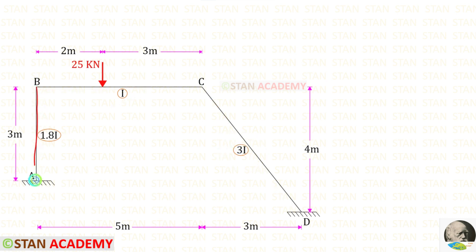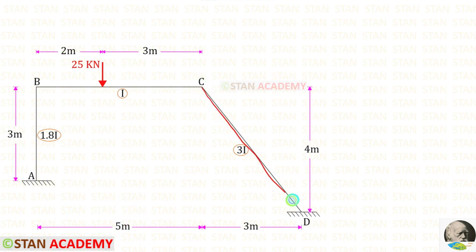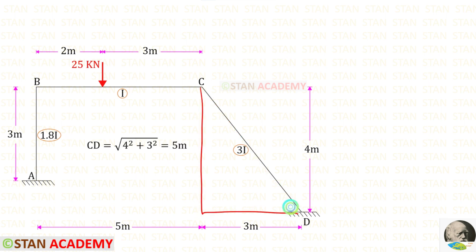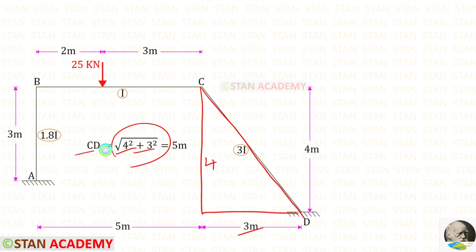The height of AB is 3 meters and the length of BC is 5 meters. We need to find the inclined length of CD. We can apply the Pythagorean theorem to this triangle: root of (4 squared plus 3 squared). We get the length of CD which is 5 meters.